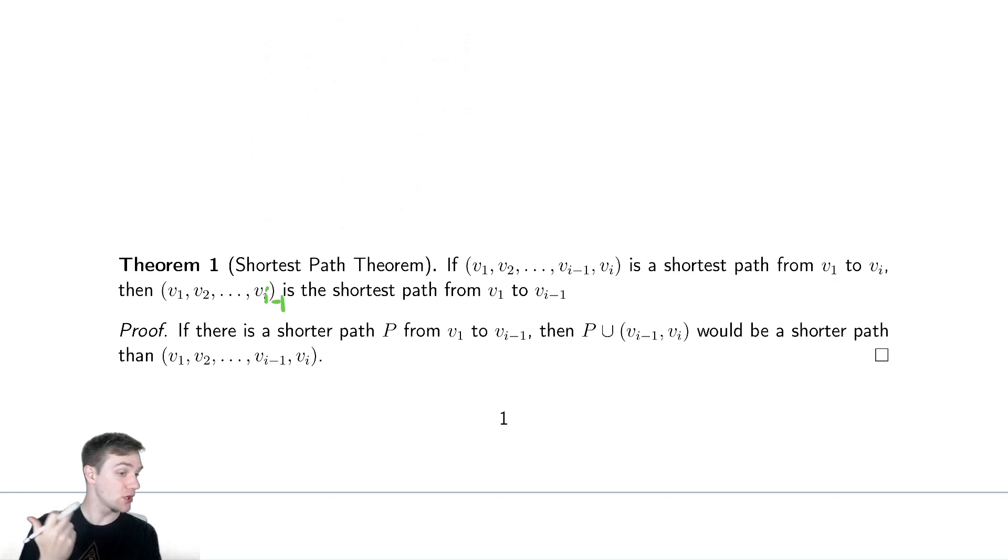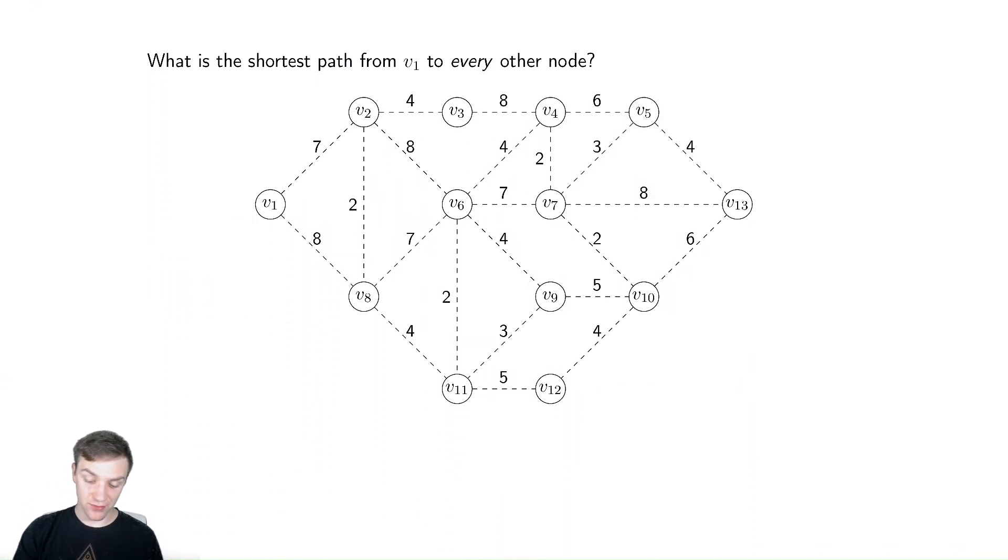Now, what if we actually made this a harder problem? That sounds like a strange thing, but sometimes generalizing a problem can cause you to come up with a better solution. Sometimes solving a specific problem turns out to be more difficult than solving a generic problem. So let's consider this problem. What is the shortest path from v1, that starting node I had before, to every single other node in the graph? That might actually be easier.